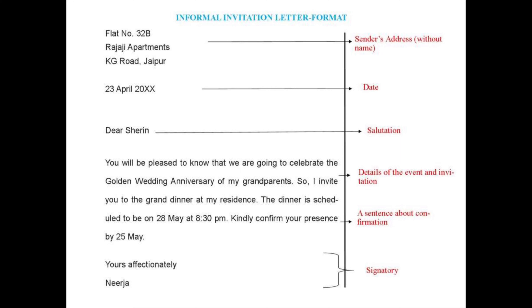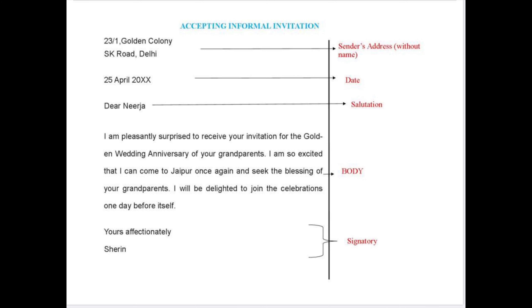Let us see the format of informal invitation. Informal invitation follows the format of an informal letter. We start with the sender's address without name, then date, then directly we go to salutation. There is no subject in an informal invitation letter. Then the body — the body does not have any particular pattern; it is a very informal kind of letter. You can write some pleasantries and then go to the matter: what function you have and you can invite them. At the end, one sentence can be given about the confirmation — how they should confirm their presence — and then the signatory as usual.